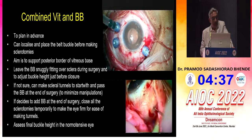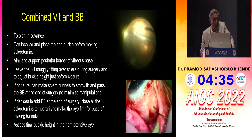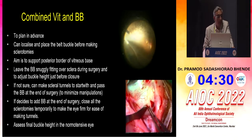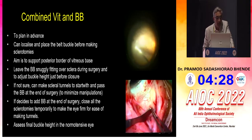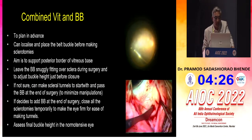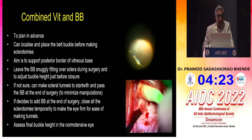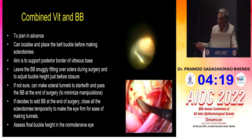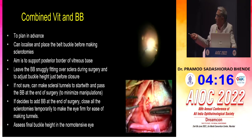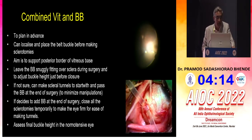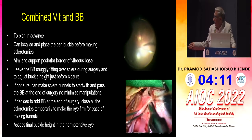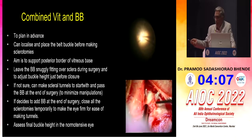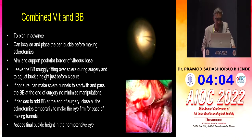You need to plan in advance — localize and place the belt buckle before making the sclerotomy if you can, and aim to support the posterior border. Leaving the belt buckle snugly fitting over the sclera during surgery, I add it before the surgery in cases where vitreous cannot be separated completely, such as ROP babies. Knowing these situations, I sometimes add a buckle well in advance, even before I start vitrectomy and before I make the sclerotomy, after trying to localize the vitreous base. Keep it snugly fitting.